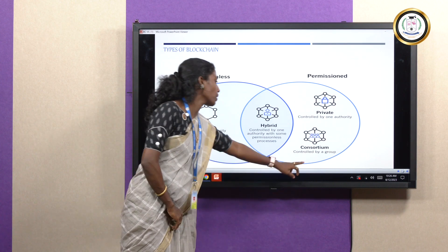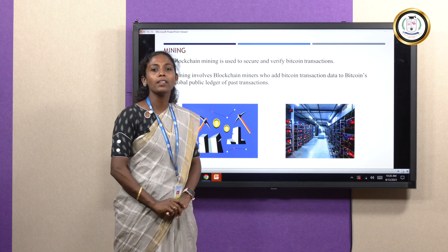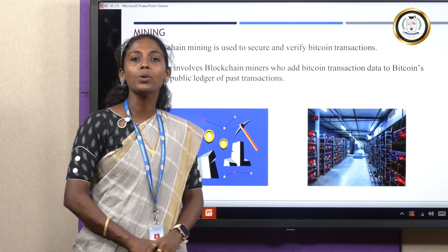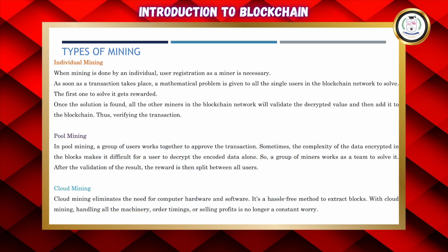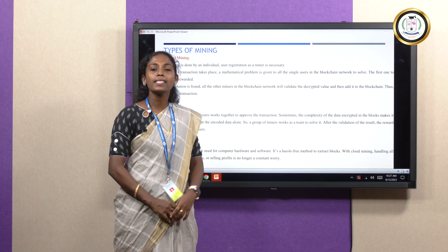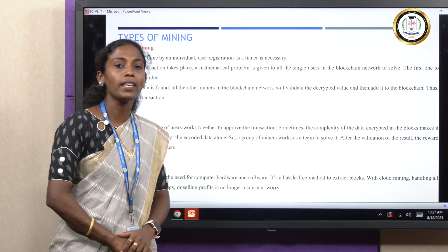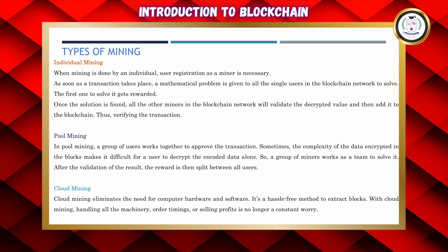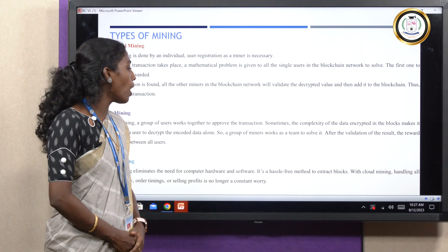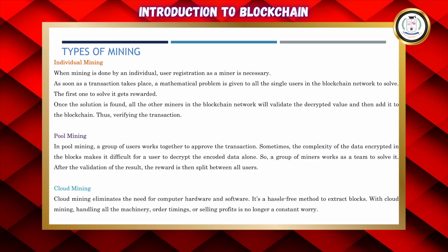Mining is the validation process — all data stored in a block is validated by a mining node, and miner nodes receive rewards as cryptocurrencies such as Ether or Bitcoin. Types of mining: individual mining is a single person doing the mining process; pool mining is a team of people mining together; and cloud mining allows mining without physical equipment, using a mining rig in the cloud — eliminating the need for computer hardware and software.